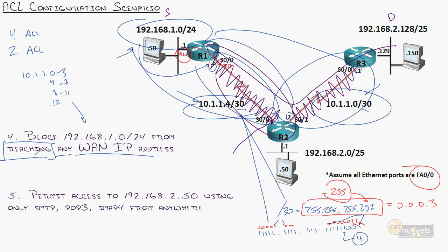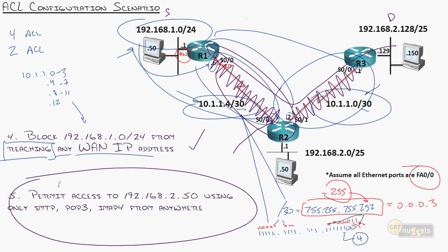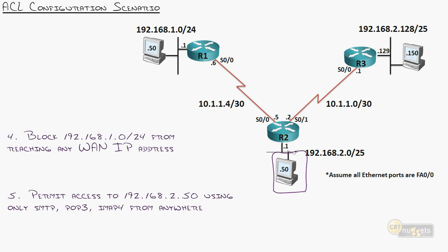Last scenario: permit 192.168.2.50 to be accessed using only SMTP, POP3, and IMAP4 from anywhere. This is presumably an email server. You can see why knowing port numbers is critical — SMTP is TCP port 25, POP3 is TCP port 110, IMAP4 is TCP port 143. So you can immediately fill in the gaps on your firewall and allow only those ports in.